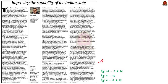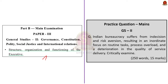Look at this editorial article. It highlights the dual challenge faced by the Indian government: excessive bureaucratic hurdles and shortage of civil servants and essential public sector resources. The article emphasizes the need for a more robust and efficient public sector to cater to societal needs effectively. We shall approach this topic in our usual mains answer writing approach. This topic comes under GS Paper 2 under the sub-heading structure, organization, and functioning of the executive. The question asks us to critically examine how Indian bureaucracy suffers from indecision and risk aversion, resulting in focus on routine tasks, process overload, and deterioration in service delivery quality.